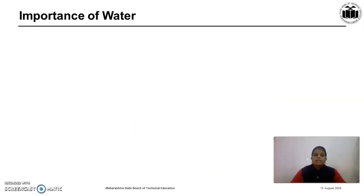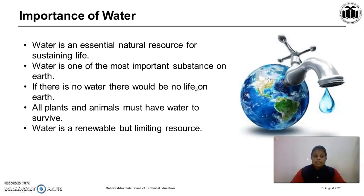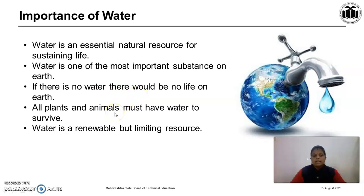From this, it is clear that only 1 percent is pure and usable water, meaning water is very precious and we have to use it carefully. Water is an essential natural resource for sustaining life. If there is no water, then there would be no life on earth. All plants and animals must have water to survive. So water is a renewable but limiting resource, and hence we have to use it very carefully.